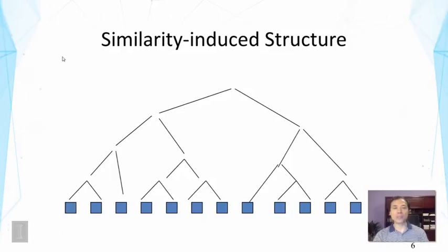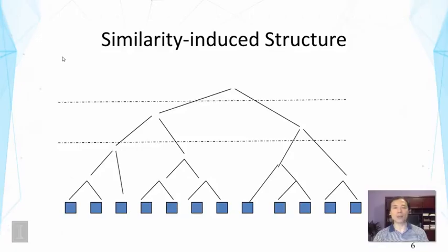Depending on the application, we can use the whole hierarchy as a structure for browsing, or we can choose a cutoff — for example, cut at a certain level to get four clusters, use a threshold to cut, or cut at a high level to get just two clusters.